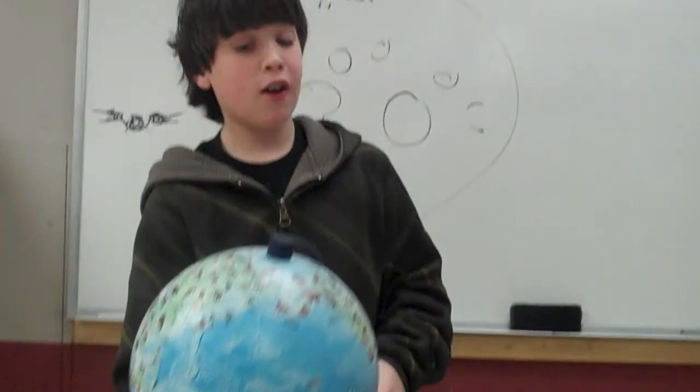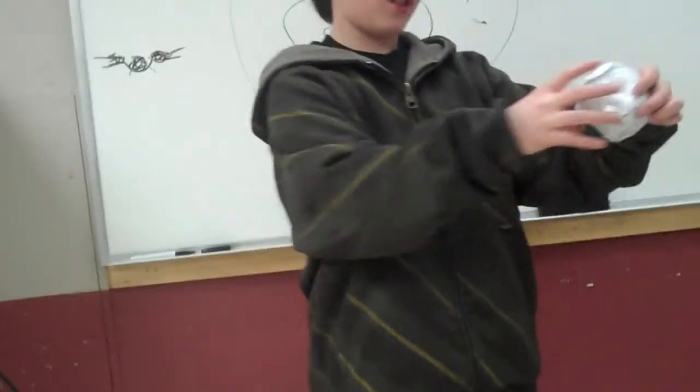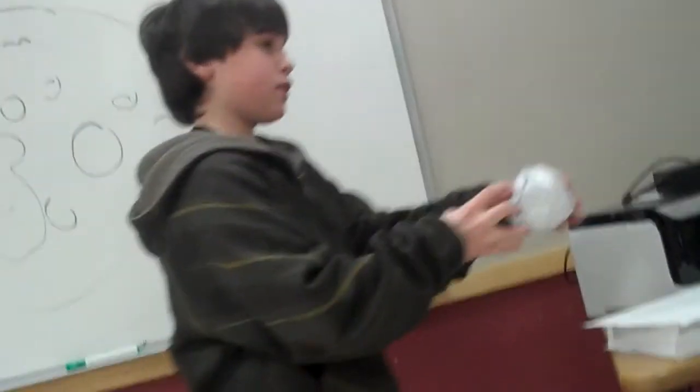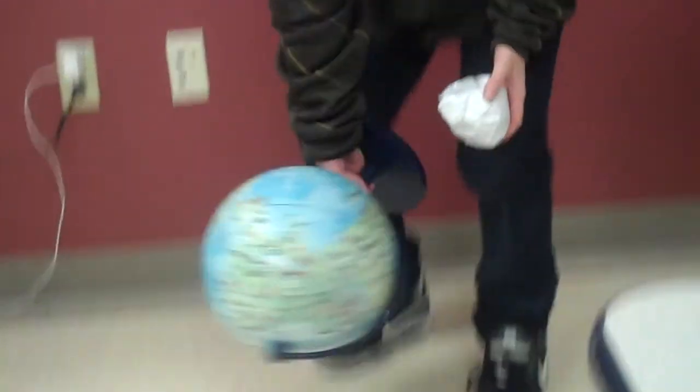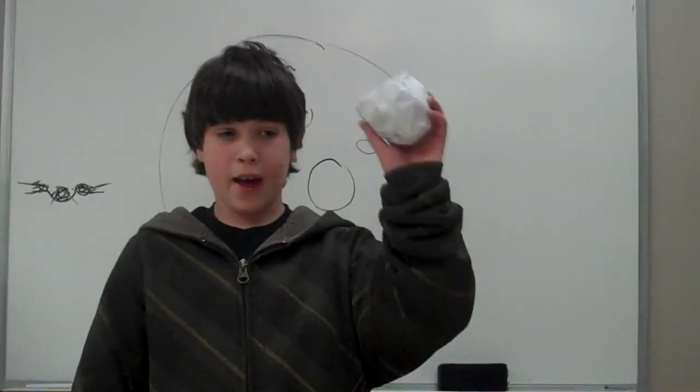But if the sun was gone, so let's say it disappeared, all the planets would just spin and go anywhere they want. And if the Earth was gone, the moon would just go anywhere it wants like an asteroid, kind of. And thanks for listening, hope you liked my presentation, and bye.